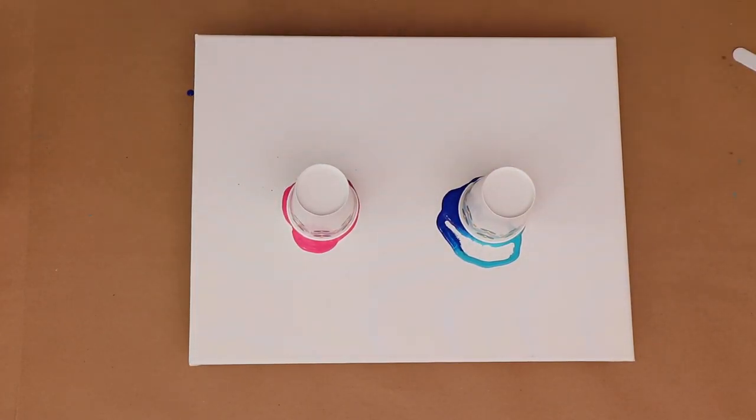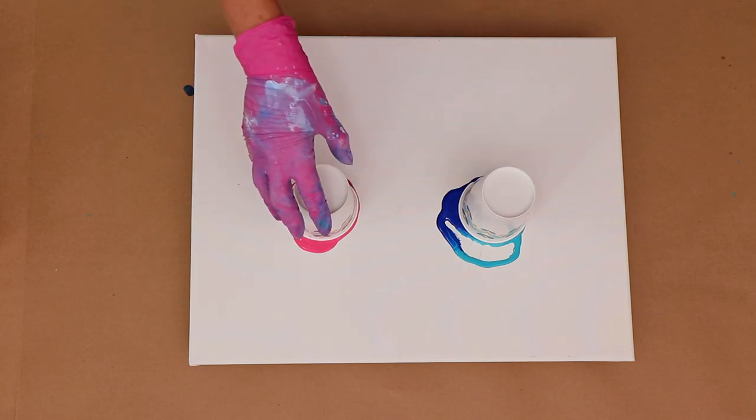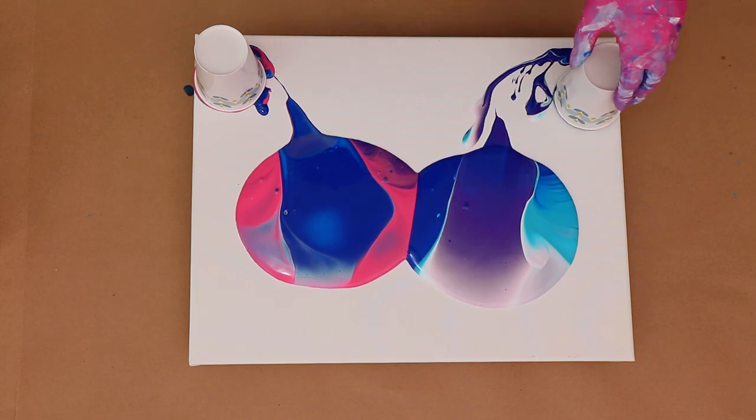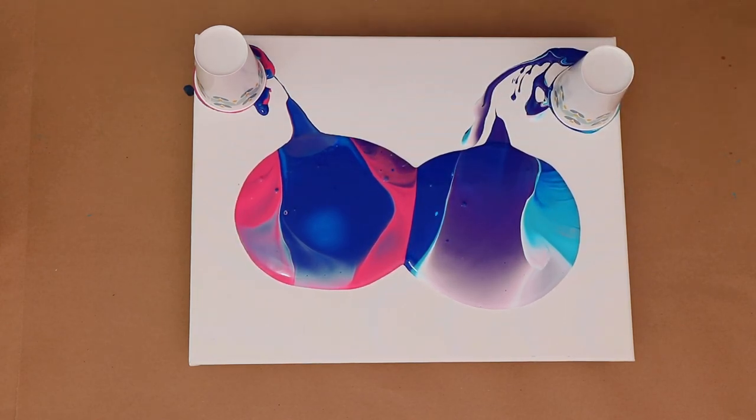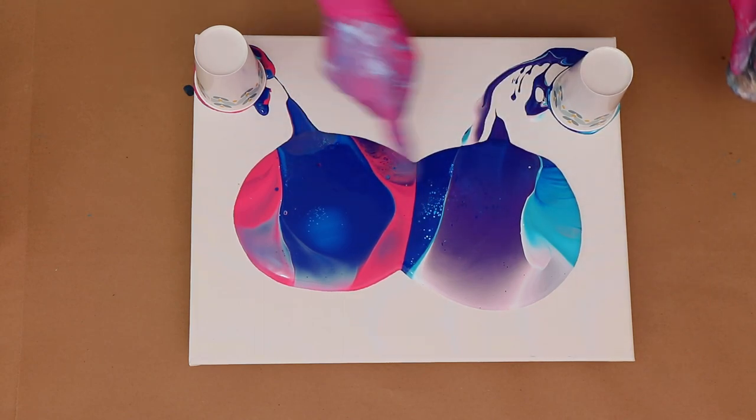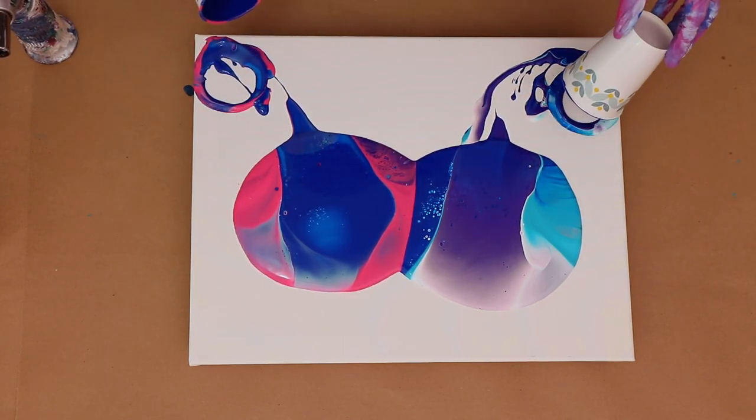Alright, so I'm just doing a double flip cup here. Alright, so now I'm just going to lift the first cup. And now the second cup. And I'm going to set them in the corner, so some of the paint can drip down the sides. And I am using my torch to pop those air bubbles.